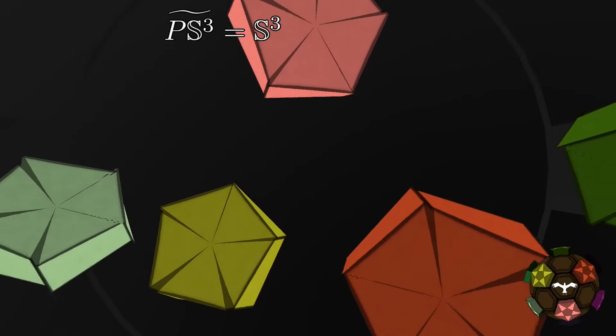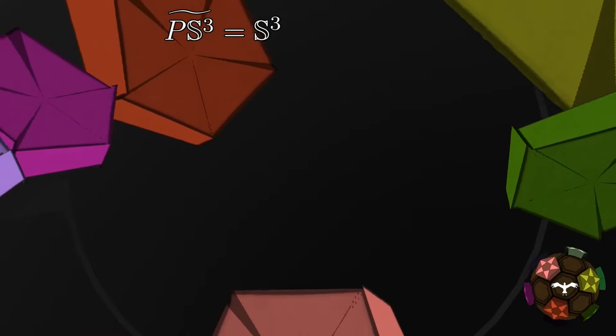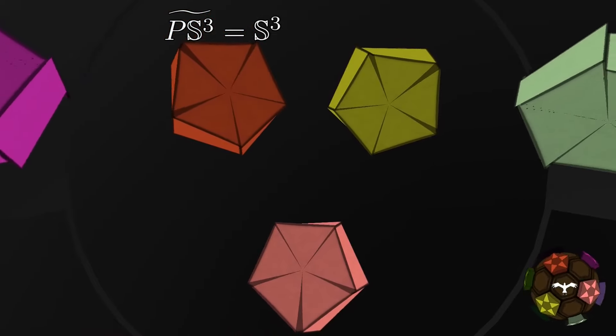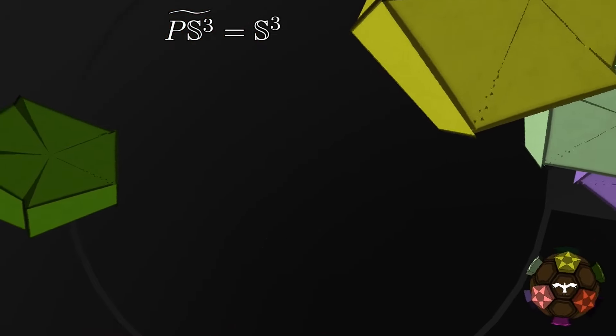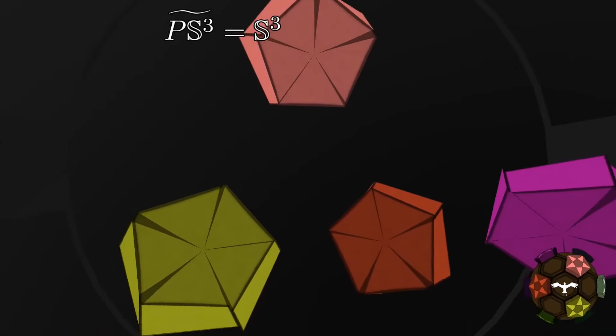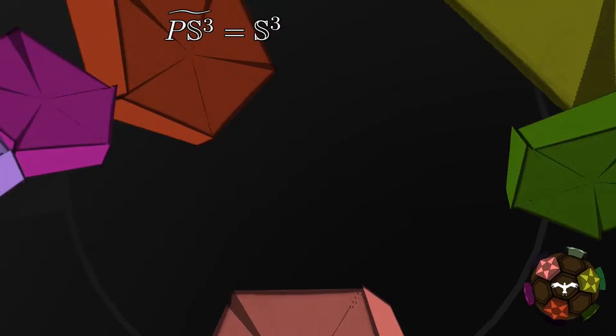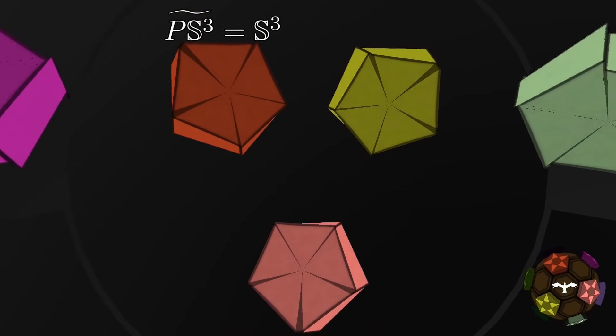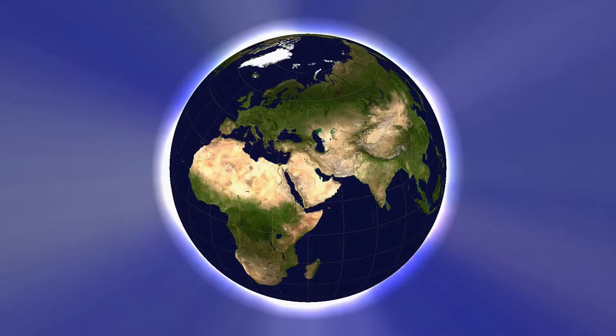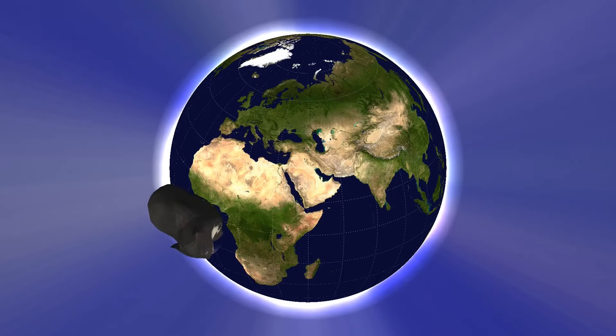When you move 4pi in the phi direction, you return to the same place, equivalently moving by 2pi is the same as moving by minus 2pi. We call it a double cover. Such an equivalence might not be intuitive, so let us see a geometric explanation.